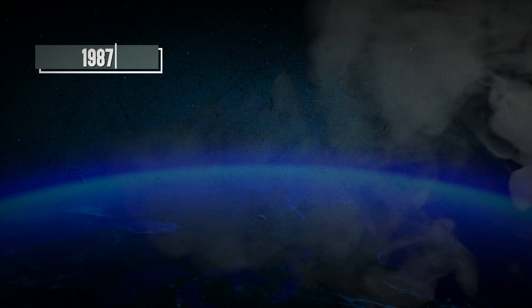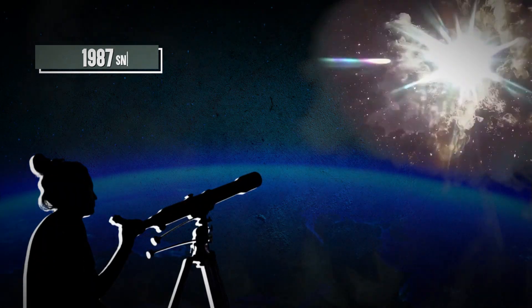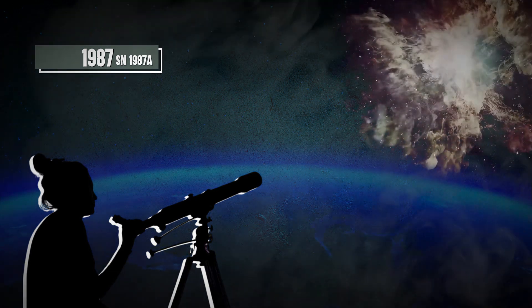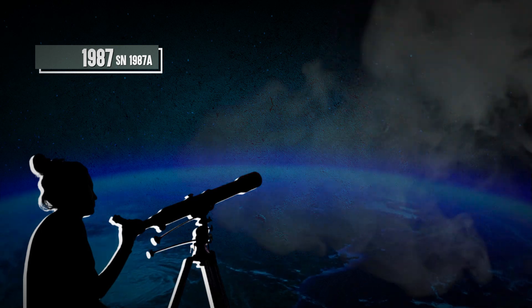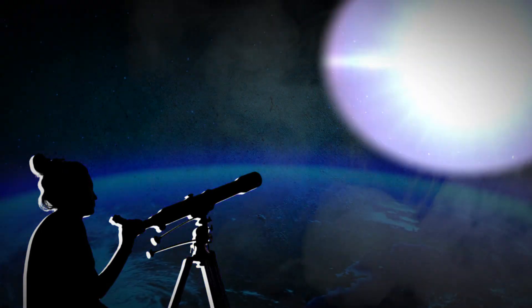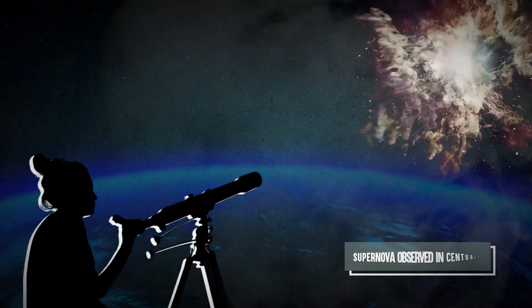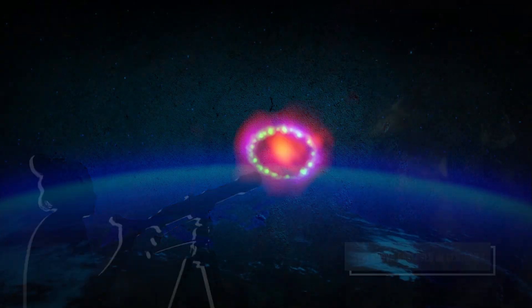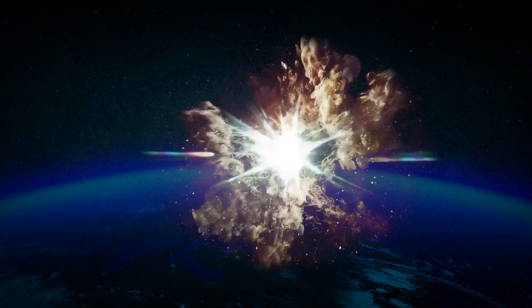Back in 1987, astronomers witnessed the mind-blowing explosion of SN 1987A, a stellar explosion so bright it made Hollywood explosions look like sparklers. This explosion wasn't just any explosion. It was the closest supernova observed in centuries, and it gave us a front-row seat to the dramatic finale of a giant star's life.